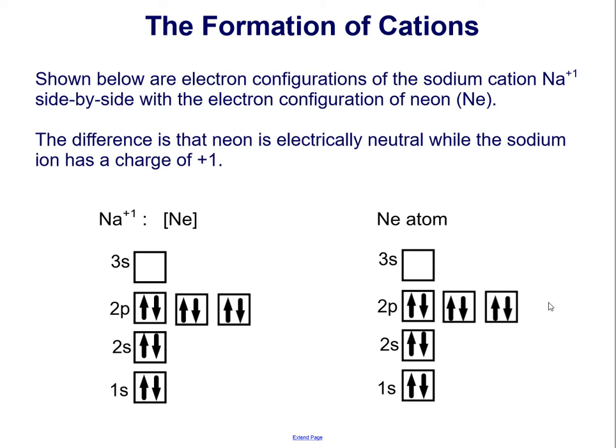Shown below are electron configurations of the sodium cation, Na⁺¹, side by side with the electron configuration of neon. The difference is that neon is electrically neutral, while the sodium ion has a charge of +1. So the electron configurations are the same, but the difference is that sodium has one more proton than neon, so it has a net positive charge.